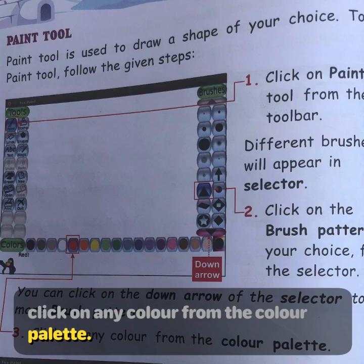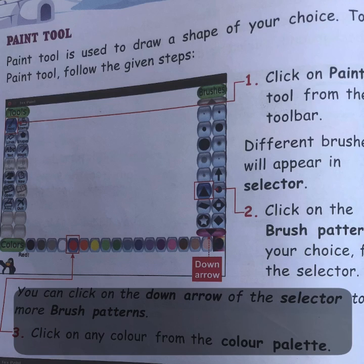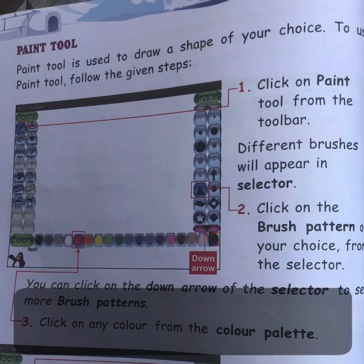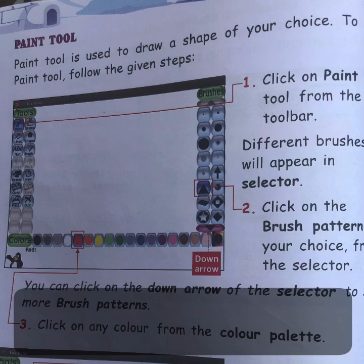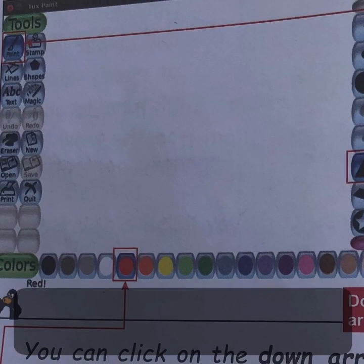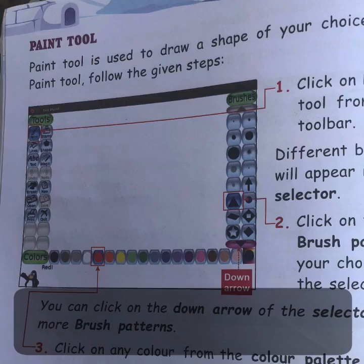So to recap: first click on Paint Tool, then different brushes will appear in the selector. Choose any brush pattern of your choice, then click on any color from the color palette. That is the Paint Tool setup.